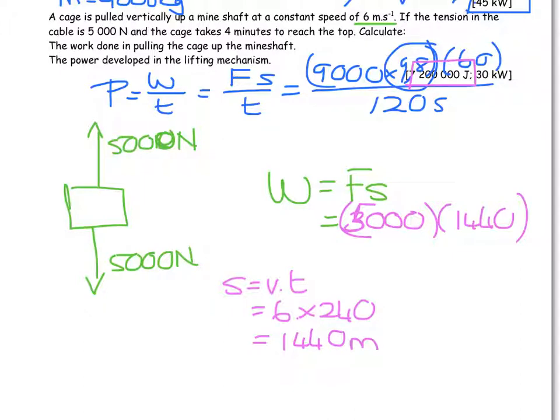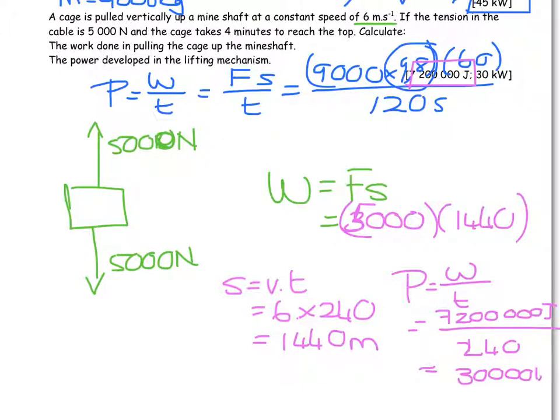Then they would like to know the power. Power is simply work done divided by time, which is equal to 7,200,000 joules divided by the time, and the time again was 240 seconds. And I land up with 30,000 watts, which is 30 kilowatts.